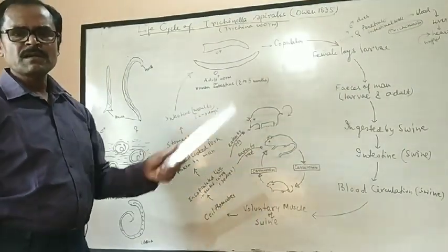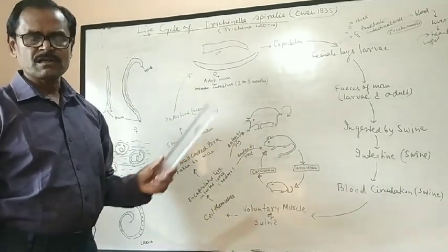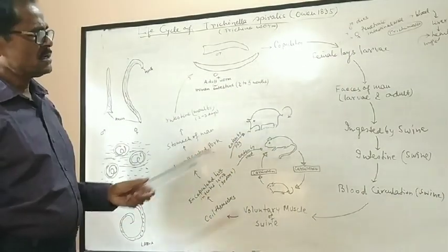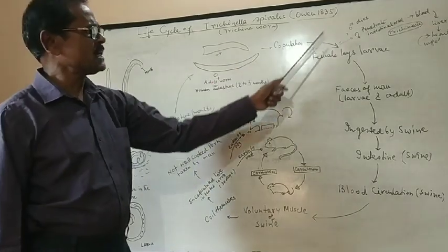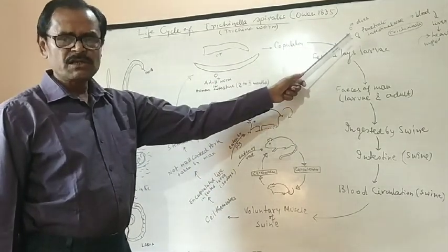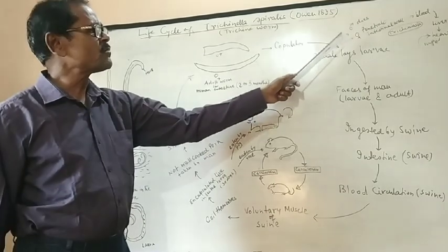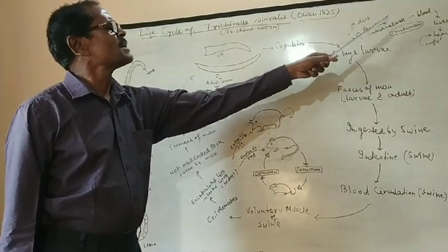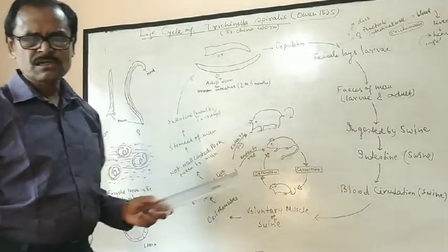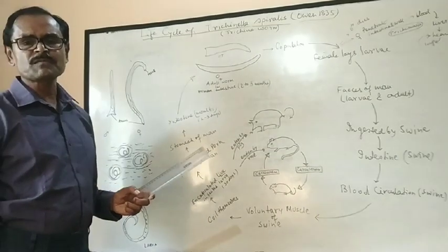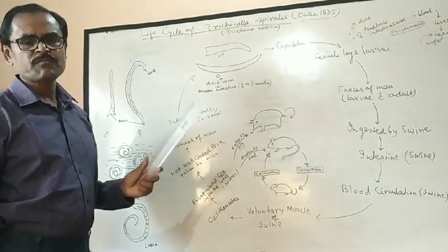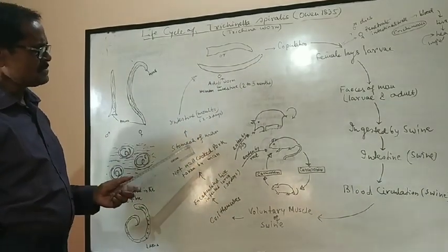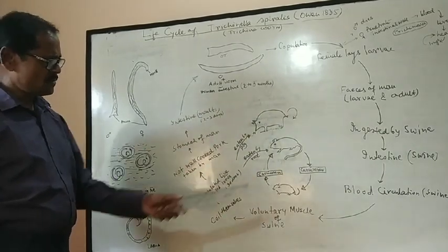This tendency causes trichiniasis. If transmitted within the human body and not passing to pig, it will cause trichiniasis. After copulation, male dies and the female tries to bore the intestinal wall through venous blood, causing trichiniasis. Symptoms include diarrhea, stomach pain, abdominal pain, and muscular pain. This should be controlled.